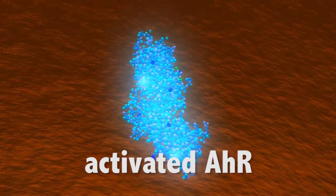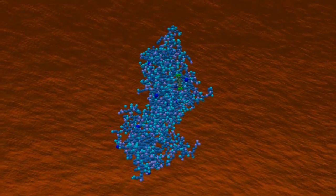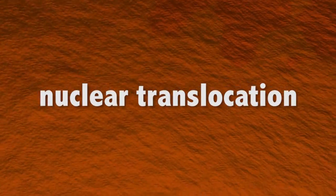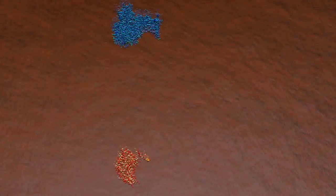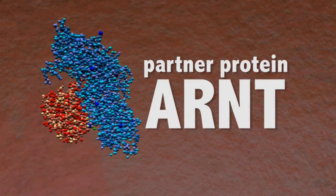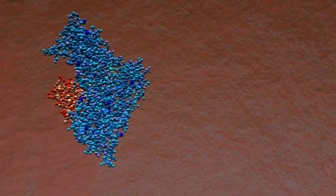AHR activation is achieved by ligand binding to the PAS-B domain of the AHR. This results in nuclear translocation of the AHR where its partner protein, the aryl hydrocarbon receptor nuclear translocator, resides. The two proteins heterodimerize to form the active transcription factor complex.